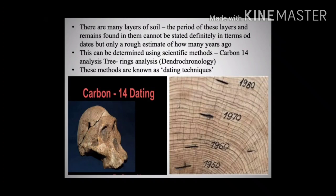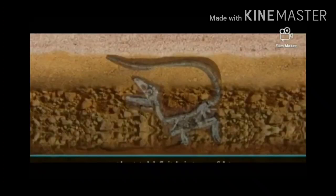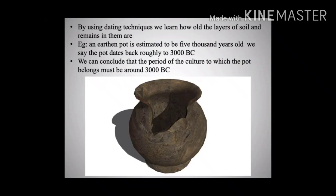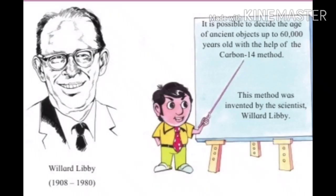By using dating techniques, we learn how old the layers of soil and the remains found in them are, and then we can determine their period approximately. For example, if an earthen pot is estimated to be 5,000 years old with the help of dating techniques, we can say that the earthen pot dates back roughly to 3000 BC, and the culture to which the pot belongs must be around 3000 BC. It is possible to decide the age of an ancient object up to 60,000 years old with the help of the carbon-14 method. This method was invented by the scientist Willard Libby.